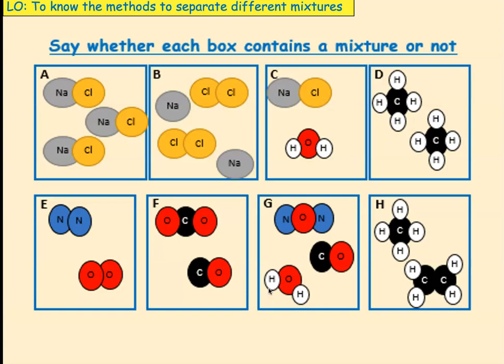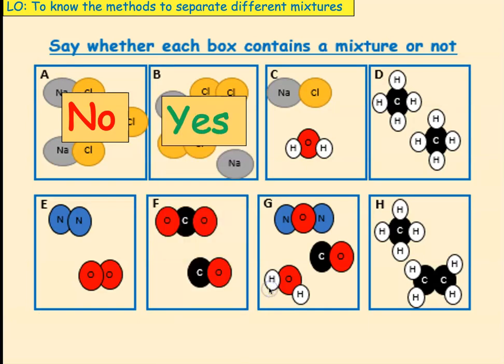Okay, year 10. Right, so let's go through the answers. The first one, as you can see, has just got sodium chloride in there. So, it is not a mixture. The second one has got the same elements, but they are mixed together. So, it is a mixture. We've got chlorine and sodium.